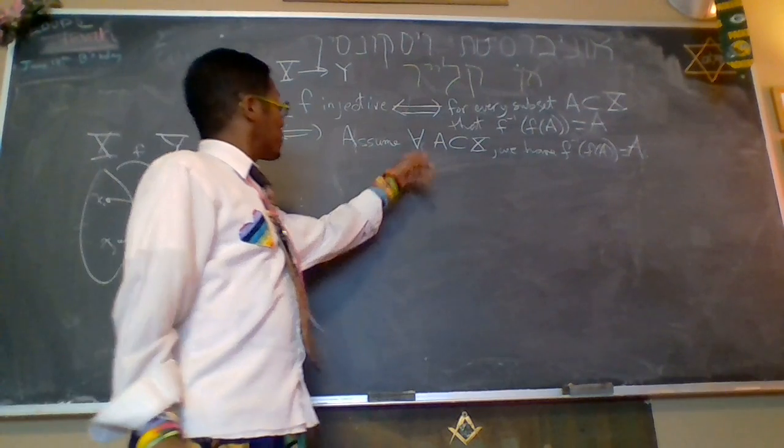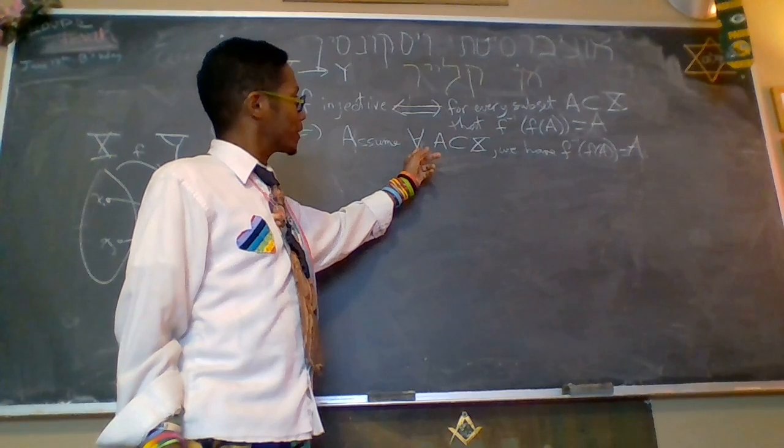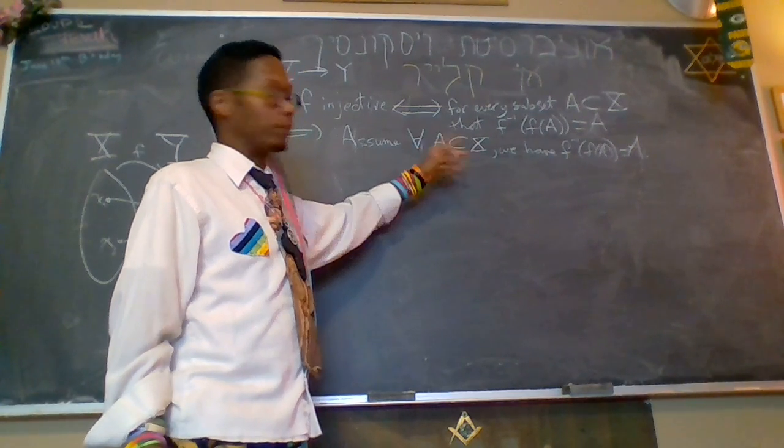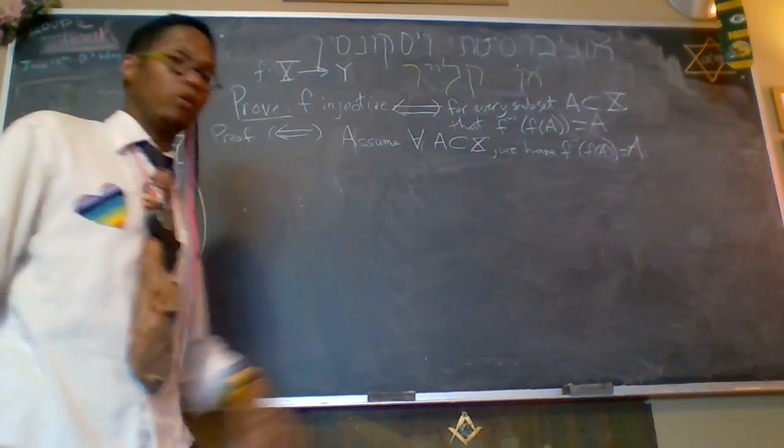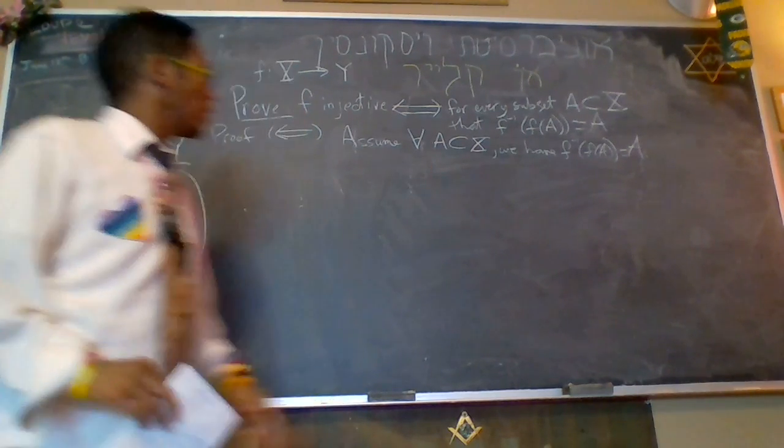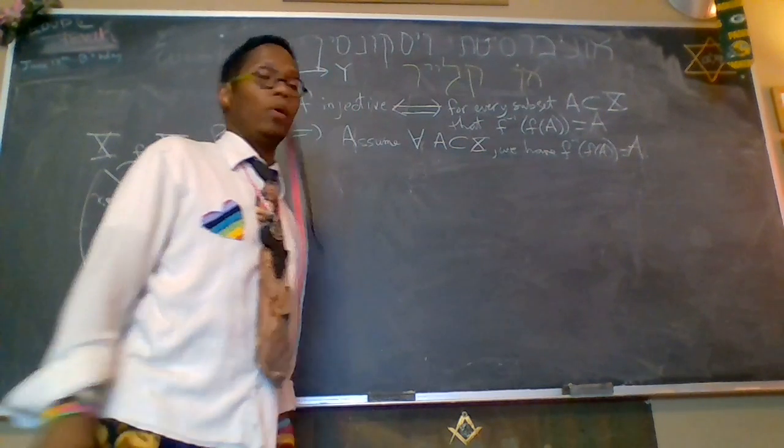By the way, in formal proofs, this is very ugly, especially because we have for all, which looks like upside down A next to an A. Don't do that. I'm just writing blackboard scratch work so that when you write the formal proof, do not do that. Okay, so let's assume for every subset A of X, we have this set equality.